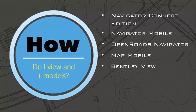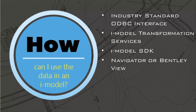So you may be wondering, how do you consume an iModel? Well, you can view an iModel simply by using our Bentley Navigator Connect Edition on the desktop, or our Navigator Mobile product on any mobile device. If you're wondering how you get to the data inside of an iModel, it's easy. Bentley provides multiple options for accessing the data in an iModel. You can view that data directly inside of Navigator or Navigator Mobile. We provide iModel transformation services that allow you to do things like aggregate or filter the data out for your own specific uses.